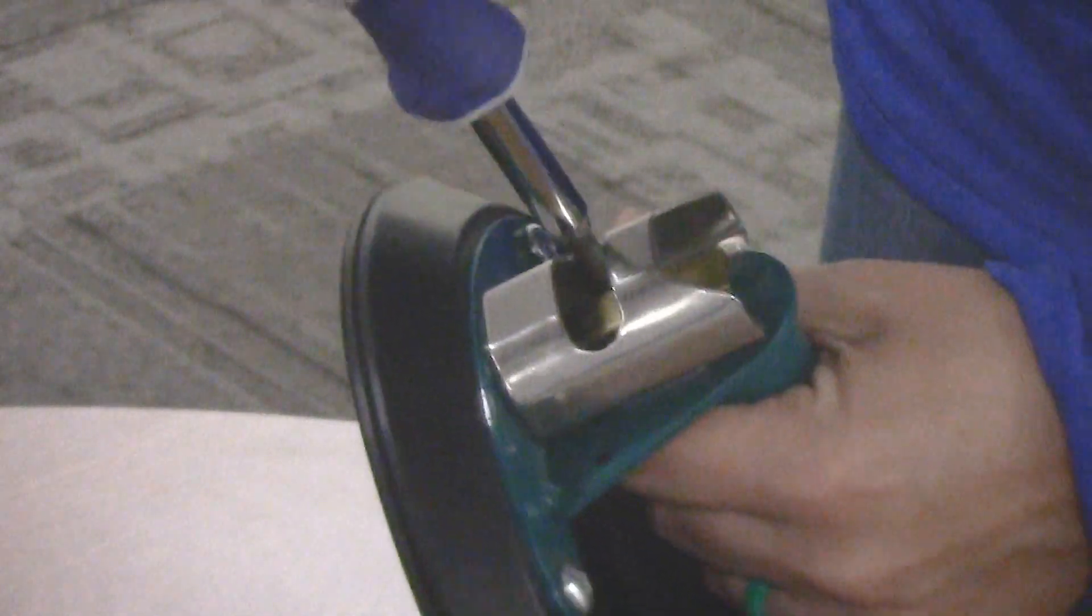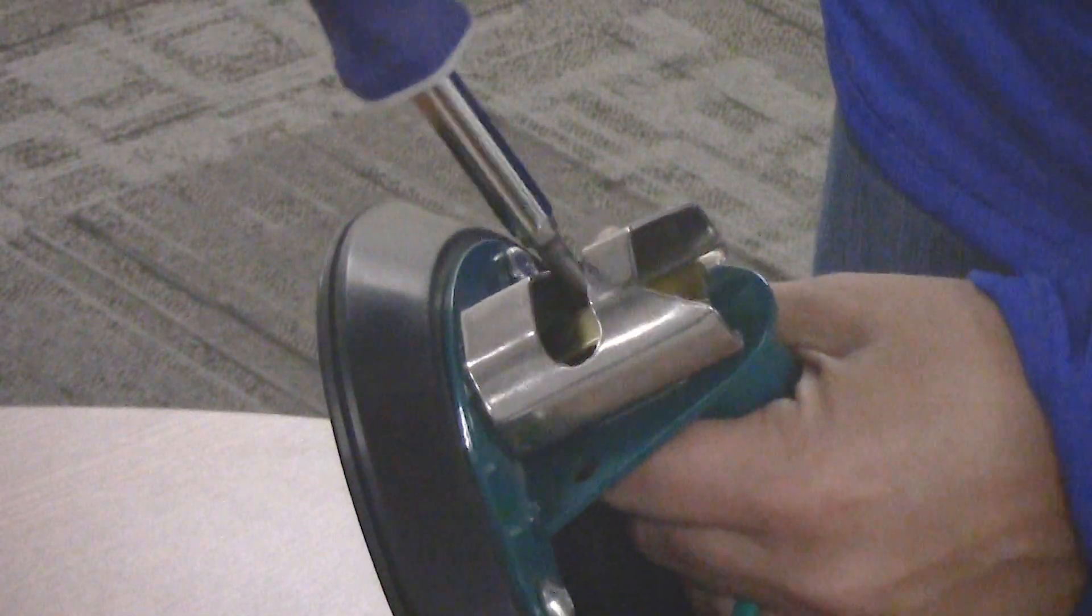If you've found that cleaning your hand cup hasn't improved the leak issues, but instead you've been able to determine that one or more components need to be replaced, the next few steps will show you how to take your cup apart and reassemble the new parts. To start, remove the two screws that hold the release valve and guard.